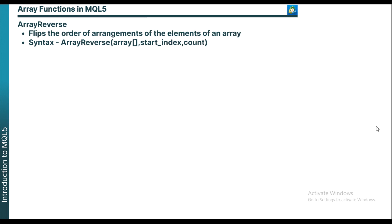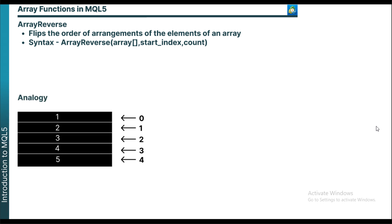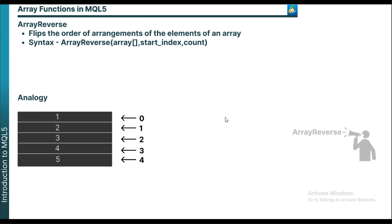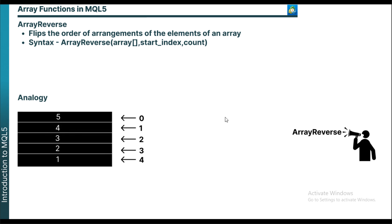ArrayReverse is used to flip the order of arrangement of an array. Using analogy, imagine you have an array and you want to flip the order, which means you want the first element to be the last element and the last element to be the first element. That is where ArrayReverse comes in — it helps you flip the order of arrangement.